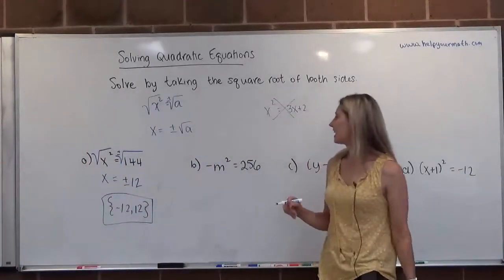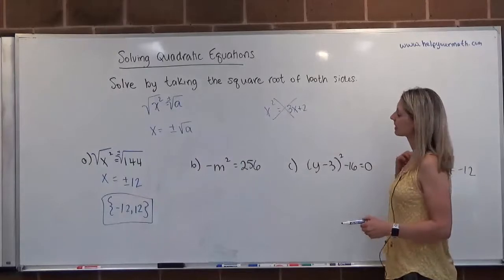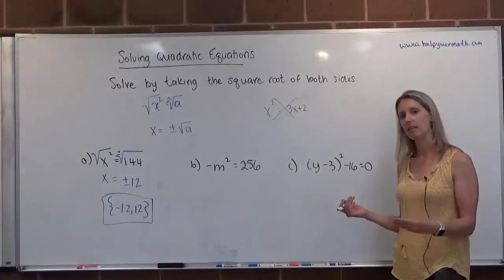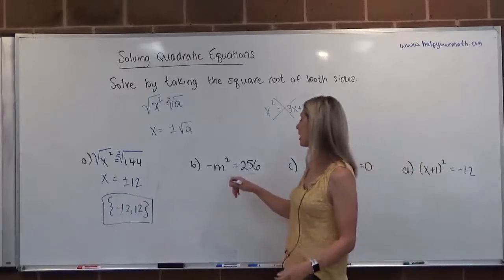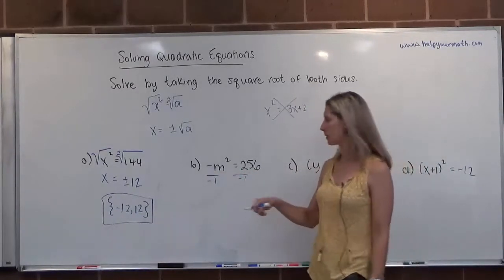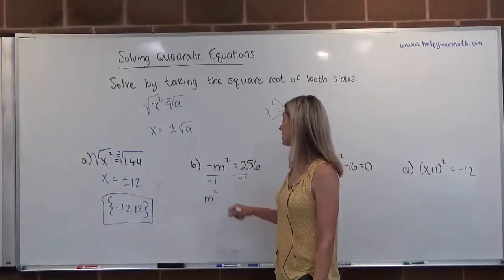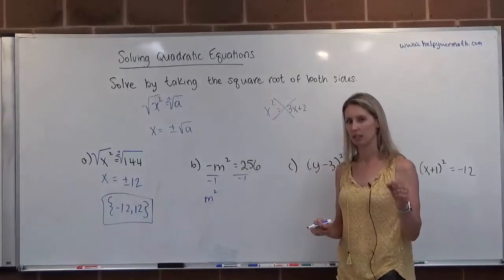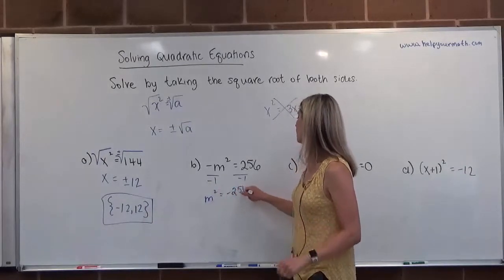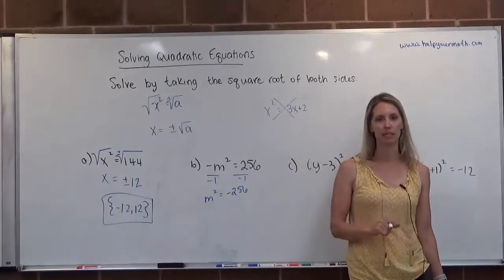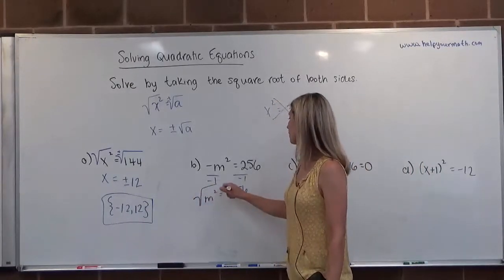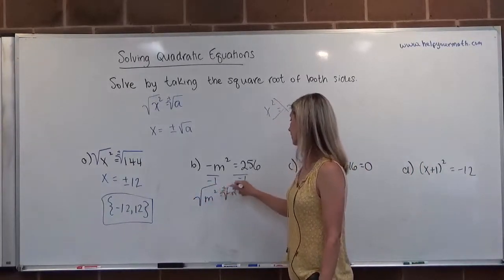For letter b, we have negative m squared equals 256. The m squared is not completely isolated yet — it has a negative in front of it. So what we need to do is divide both sides by negative 1, just to change that so we have positive m squared. We want to make sure that the squared term is isolated. So now we have m squared equals negative 256. To get m by itself, we take the square root, and when we take the square root of the numerical side, we put the positive or negative in front of it.